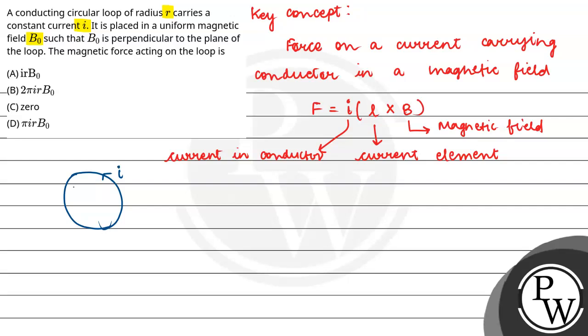And what is magnetic field? B0. Magnetic field is B0. And B0 is perpendicular to the plane of the loop. So we have made perpendicular.